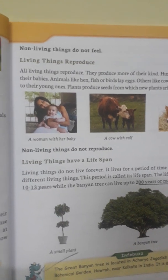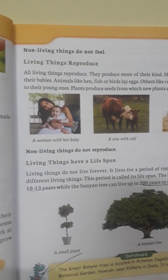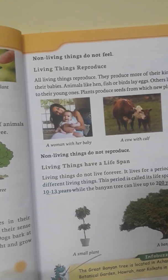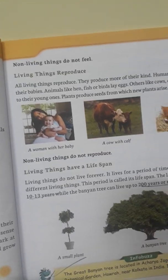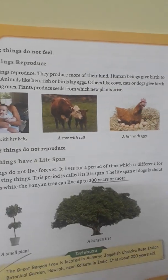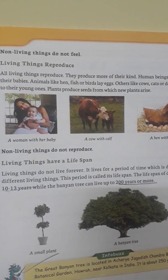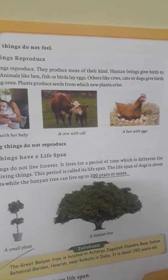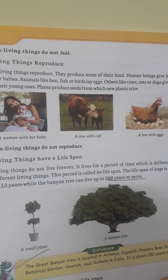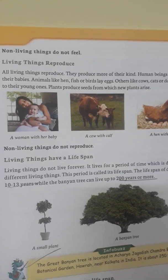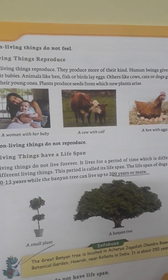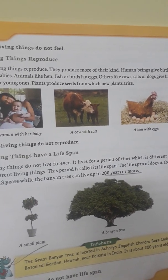Non-living things do not feel. The next point is: living things reproduce. All living things reproduce, which means they produce young ones just like them. Human beings give birth to their babies. Animals like hens, fish, or birds lay eggs. Others like cows, cats, or dogs give birth to their young ones. Plants produce new plants usually through their seeds.